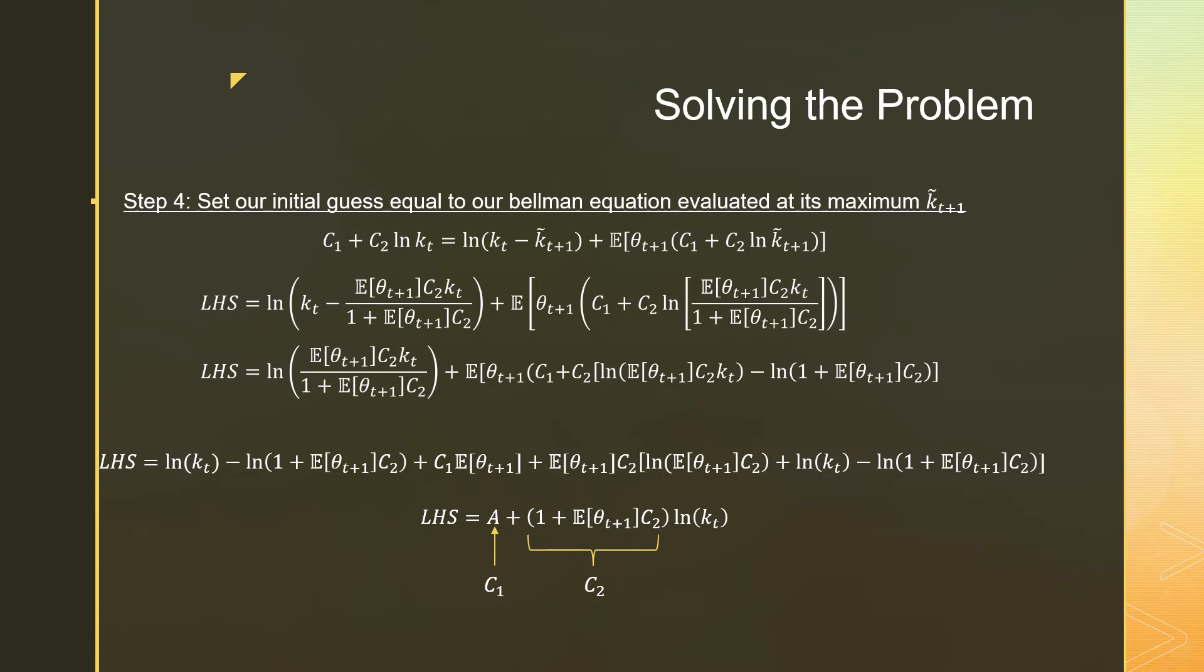Here I've just put down for our final answer for estimating our coefficients, I put in this term A that just means this is all the terms that are not attached to ln K_t. That's for our C_1. And for our C_2, which is our most important term because that's in our theoretical maximum or our theoretical policy function, that's going to be 1 plus the expectation of theta_{t+1} times C_2.